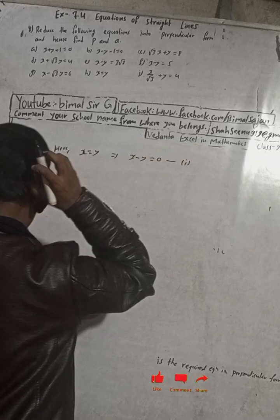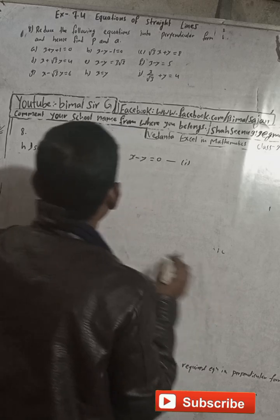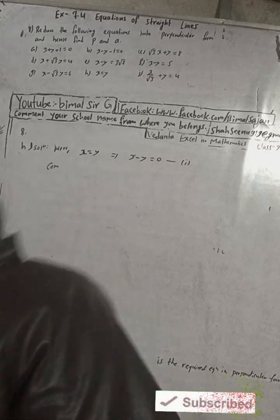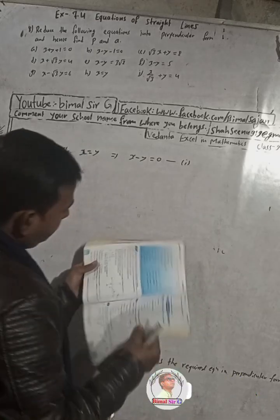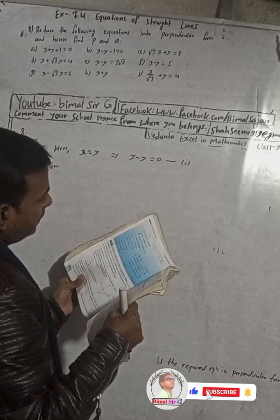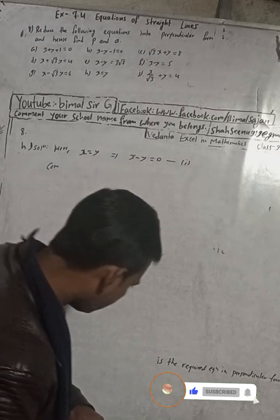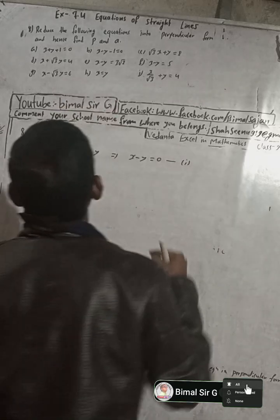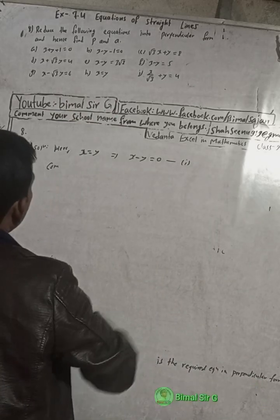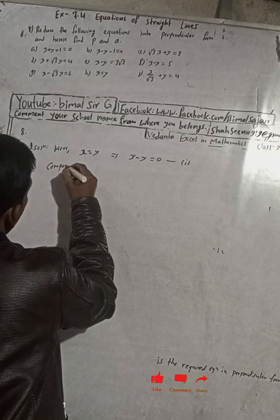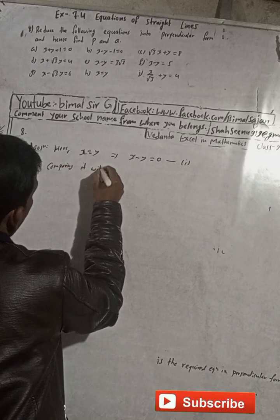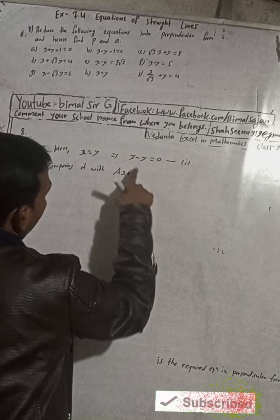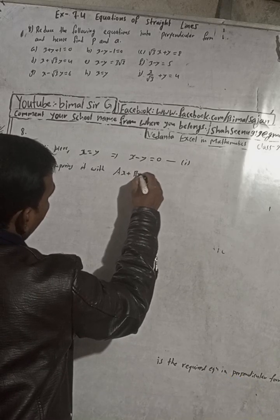Now, let me first check the answer of the previous part (g number). Our g number answer was 300x·cos 300 plus y·sin — our value was 3. Yes, 3. Now comparing this with ax plus by plus c is equal to 0.